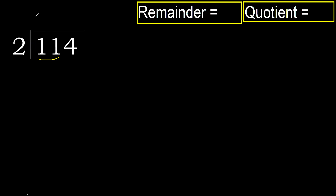12 is greater, so multiply by 5: that gives 10. 10 is not greater, ok. Subtract: remainder is 1.